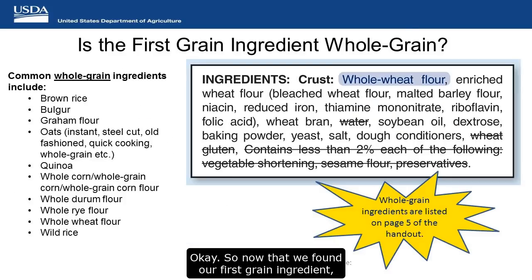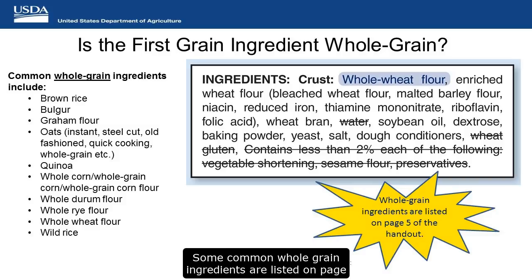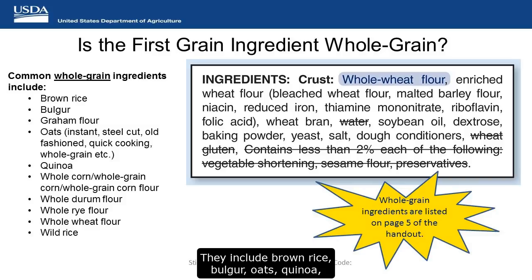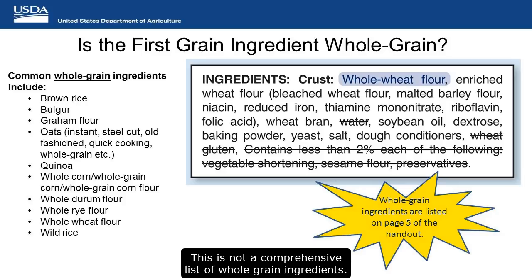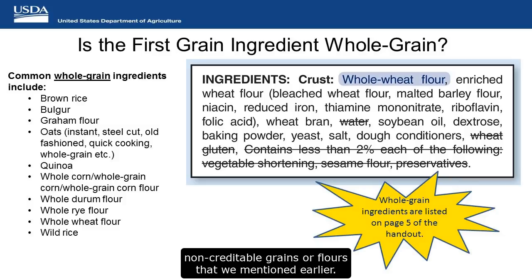Now that we've found our first grain ingredient, let's start applying the rule of three. When using the rule of three in CACFP, the first grain ingredient must be whole grain. Some common whole grain ingredients are listed on page 5 of the handout. They include brown rice, bulgur, oats, quinoa, whole corn, and others. This is not a comprehensive list, so if you have any questions about whether an ingredient is whole grain, please check with your sponsor or state agency.